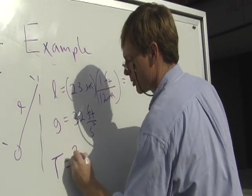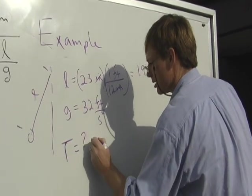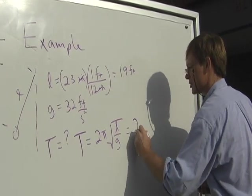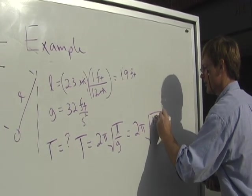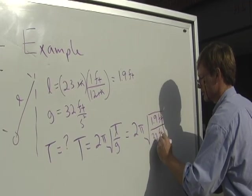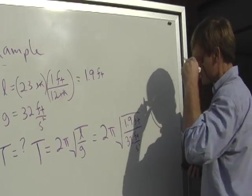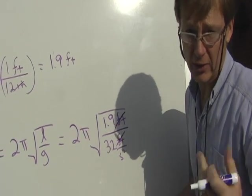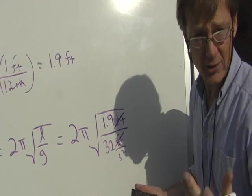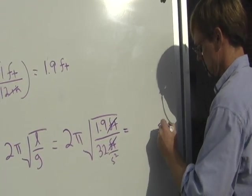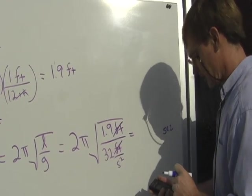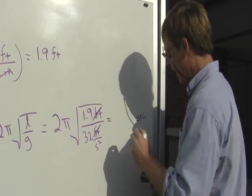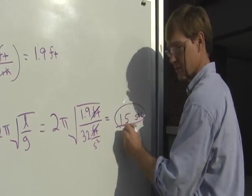The period of the pendulum is 2π times the square root of the length over gravity, which is 2π times the square root of 1.9 feet over 32 feet per second squared. The feet cancel here. I've got 1 over 1 over second squared. That's going to go to second squared. But the square root of that is seconds, which is a great thing, because that's what I want. I get 1.5 seconds for the period.